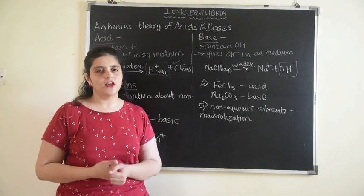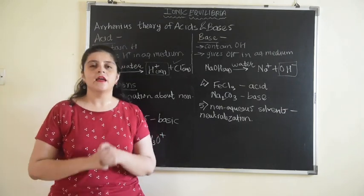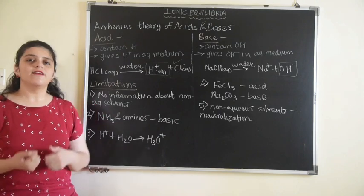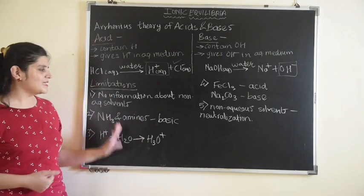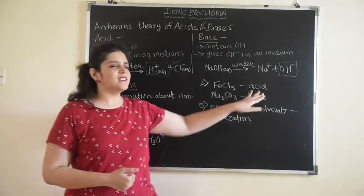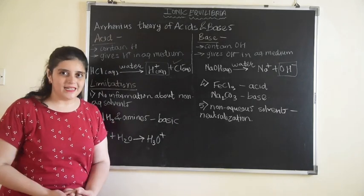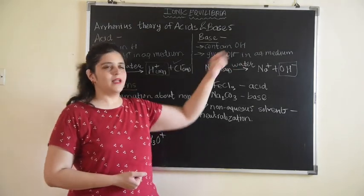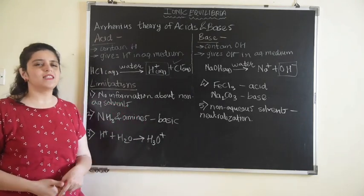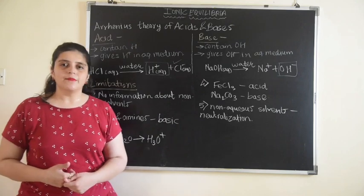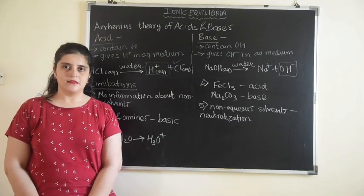There are even more limitations of Arrhenius theory beyond these. But that does not mean Arrhenius theory is wrong — the Arrhenius theory is correct. By studying its limitations, we are actually trying to understand another way of defining acids and bases, one that answers questions like why FeCl₃ is acidic and why Na₂CO₃ is basic — answers that Arrhenius theory cannot give, since it requires H⁺ for an acid and OH⁻ for a base. So we require another theory — another way of defining acids and bases. Thank you so much for watching.